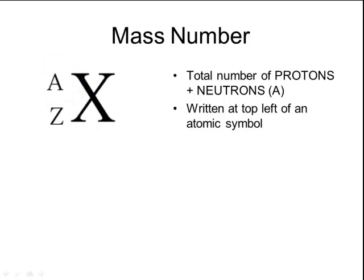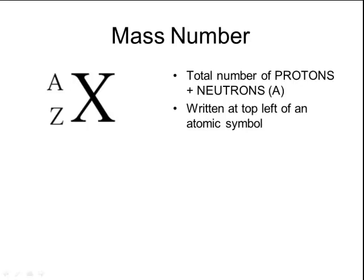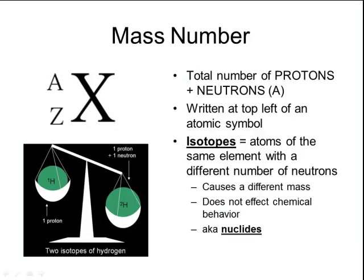Remember that John Dalton had proposed that all identical elements had the same size, mass, and properties. But then James Chadwick discovered the neutron, and we learned that atoms of the same element could actually have different masses. Those atoms are called isotopes — atoms of the same element that have a different number of neutrons, which causes a different mass.